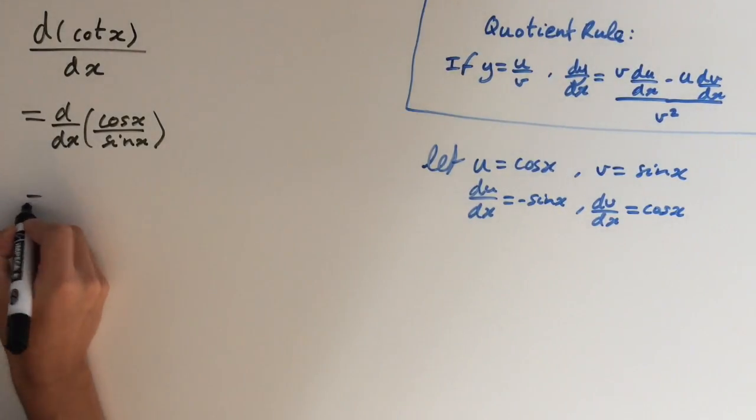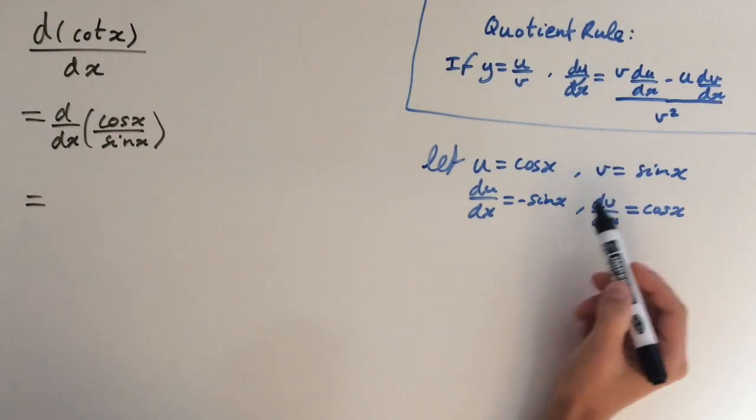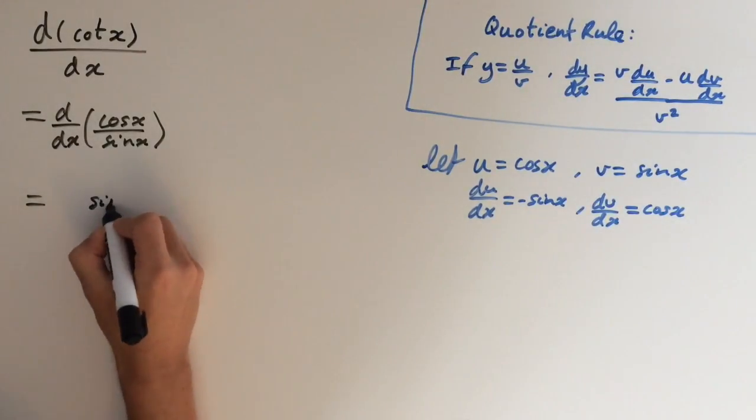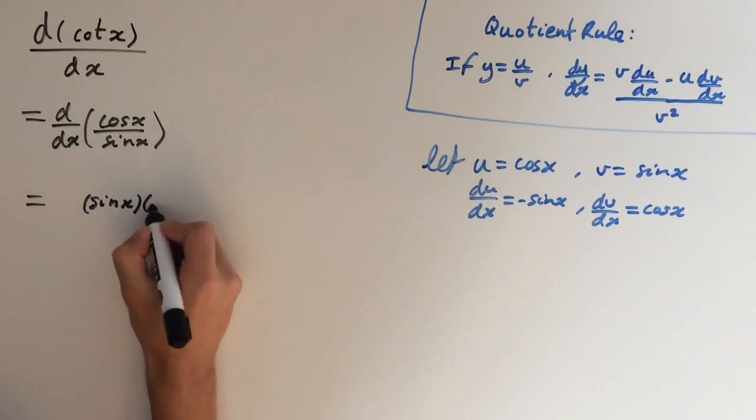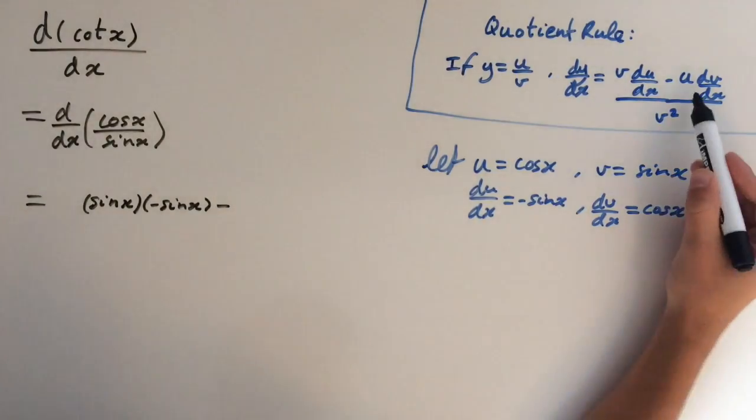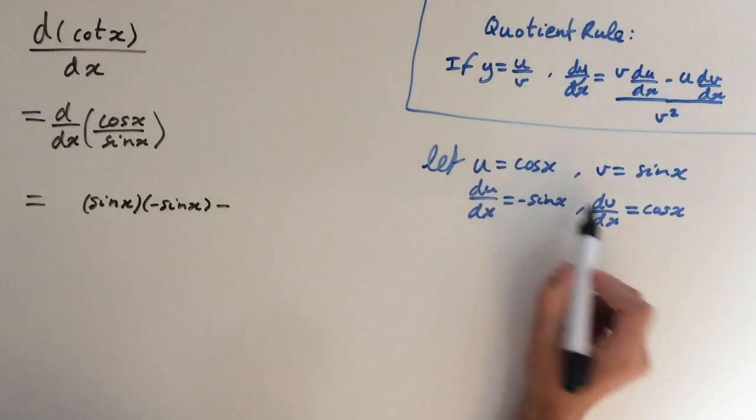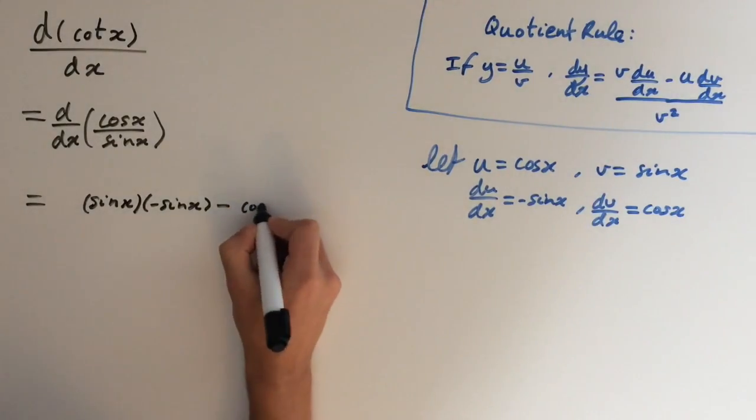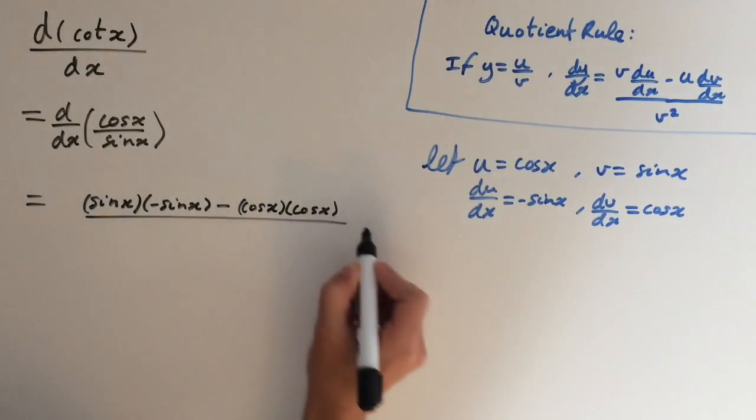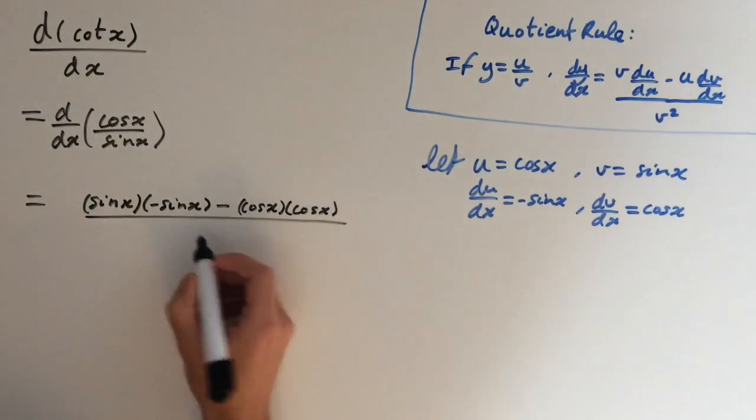So this is going to give us v times du/dx, so sin x times minus sin x, minus u times dv/dx, so cos x times cos x. And on the denominator we get v squared, so sin squared x.